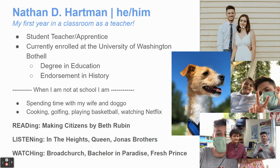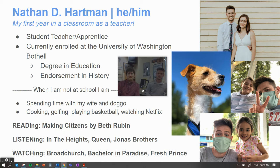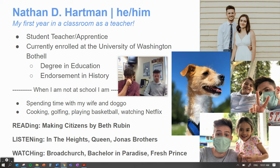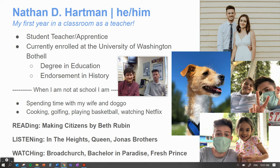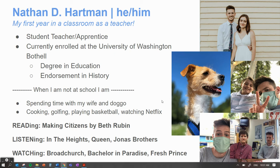I'd like to introduce Mr. Hartman. Hello everybody, I'm Nathan Hartman. I use he/him pronouns and this is my first year in a classroom as a teacher. I am the student teacher and apprentice for Mr. Maureen — he's going to help me learn how to become a teacher throughout the year. I'm currently enrolled at the University of Washington, Bothell, with a degree in education and endorsements in history. A couple of pictures: top right is me and my wife Sierra, that is my dog Ruben, and those two little humans next to my dog are my niece and nephew, who mean a lot to me. A lot of my time outside this building is spent hanging out with them and learning from them as much as I hope they learn from me. I've also shared some reading, listening, and watching I've been doing. I'm very excited to work with your students — they have already had a remarkable impact on me, and I'm excited for what the rest of the year brings.